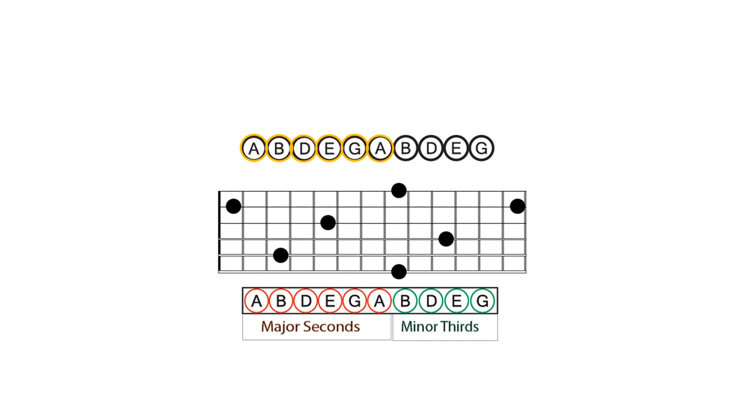Using this relationship as a reference, we can recall that there are two frets separating the roots in the C, A, and E shapes. You will find these shapes illustrated in the neck diagram below.